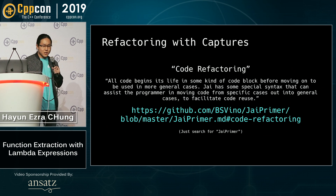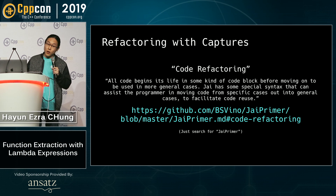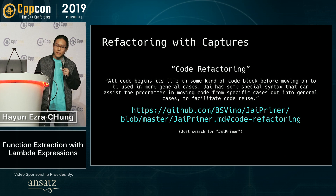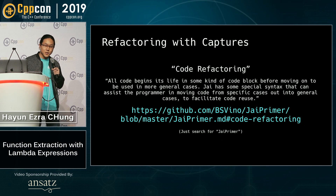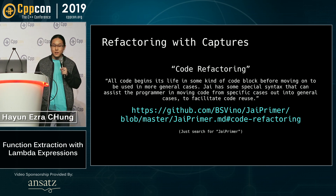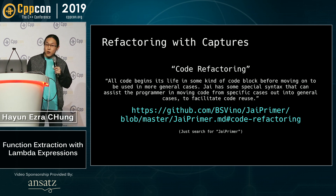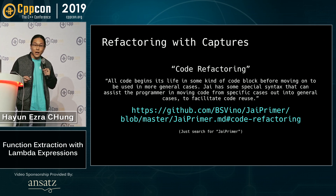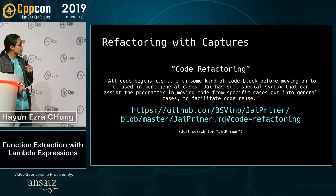A few months ago, I came across this document on GitHub called Jai Primer. It has a section named code refactoring, which begins with this paragraph: 'All code begins its life in some kind of code block before moving on to be used in more general cases.' Jai, a programming language, has some special syntax that can assist the programmer in moving code from specific cases out into general cases to facilitate code reuse — in other words, function extraction. It turns out that although C++ doesn't have the convenient syntax Jai has, the technique this section describes is possible in C++ and just as effective. I wanted to demonstrate it here today.